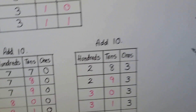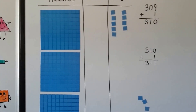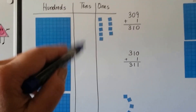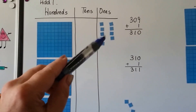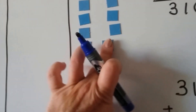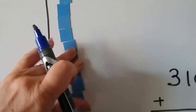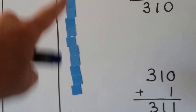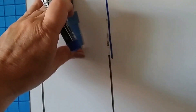Now with physical blocks: we have 300, no tens, and nine ones. If I add one more to the ones place, we make a long of ten. It's a bit crooked but that's a ten, and we can move it into the tens place.